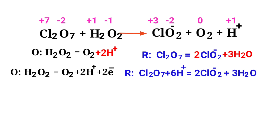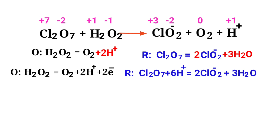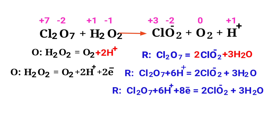Now equalize the addition of charges in the reduction half-reaction. Both sides are not equal, so add eight electrons to the left side to make it equal to minus two. Now the addition of charges are equalized in the reduction half-reaction.